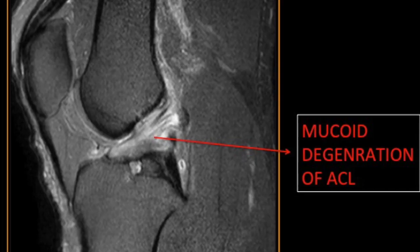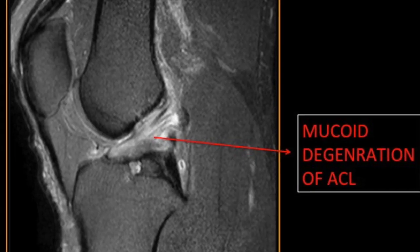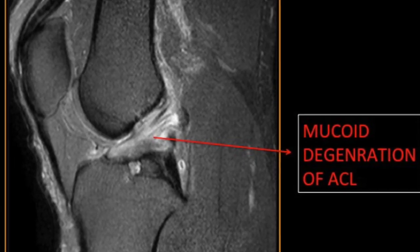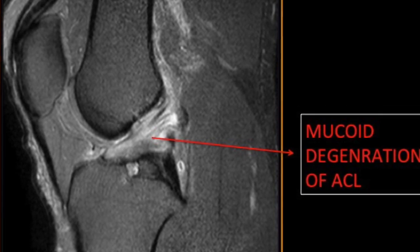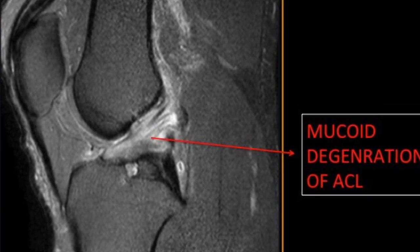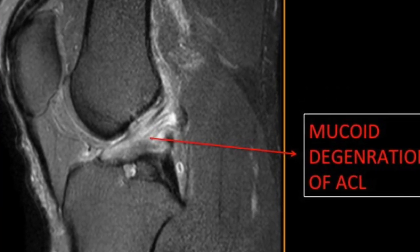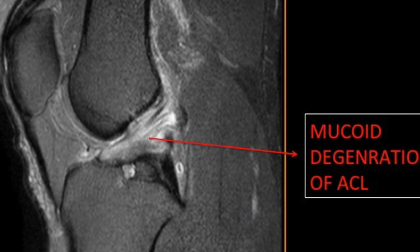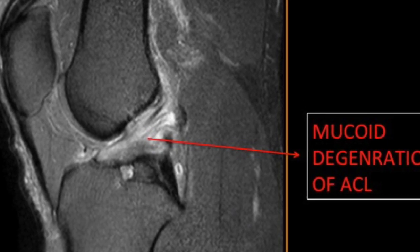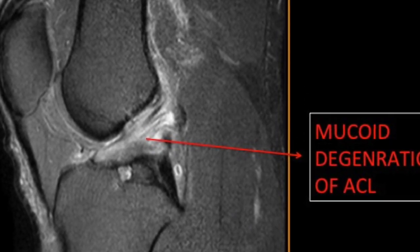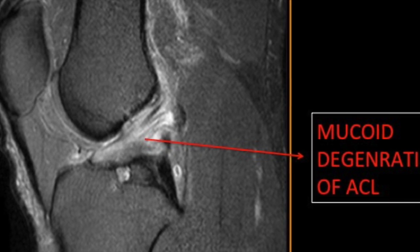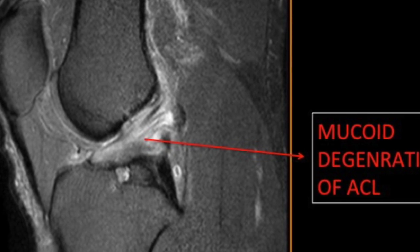Regarding mucoid degeneration of the ACL, the ACL due to degeneration takes on a celery stalk appearance, often associated with ganglion cysts. We have to take a history of injury and should not mistake mucoid degeneration of the ACL for an intrasubstance tear.